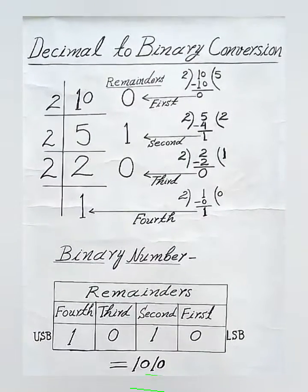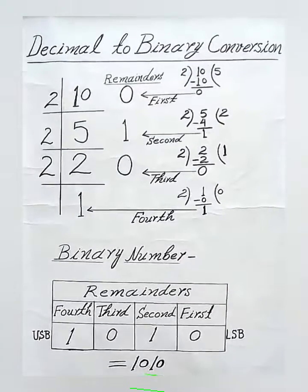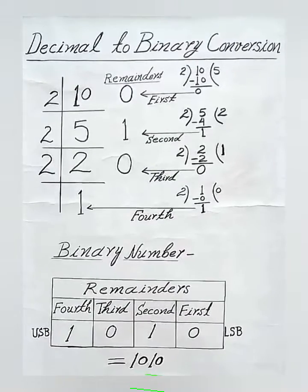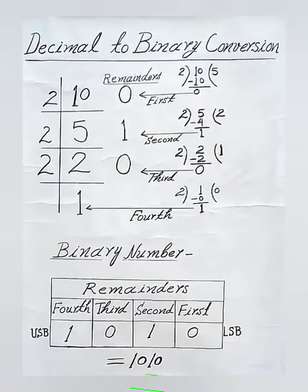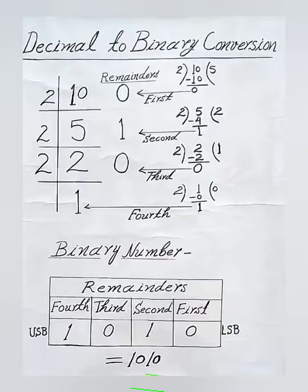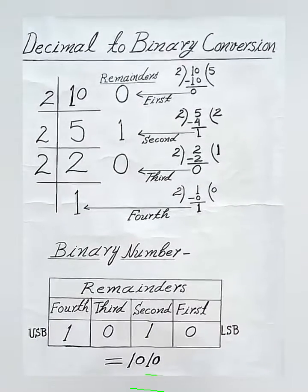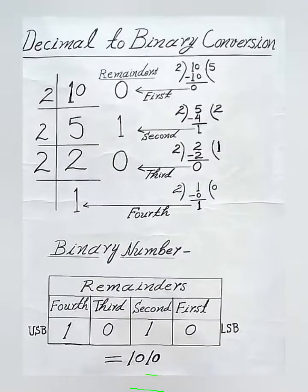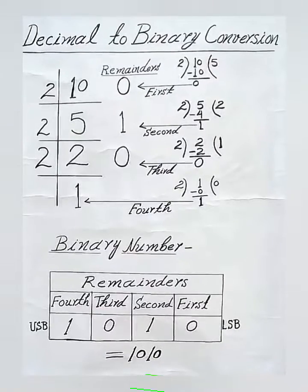You can see in my short example, first of all dividing 10 by 2 and the remainder 0 becomes first remainder. Then again dividing 5 by 2 and the second remainder becomes 1. And again we're dividing 2 by 2.